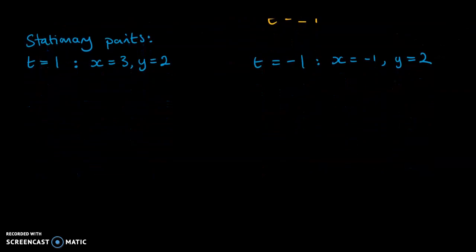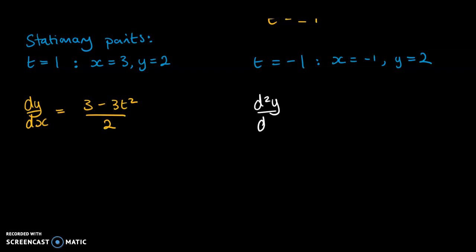Now we need to determine their nature, so for that we need to find the second derivative. The second derivative means we want to differentiate dy/dx again with respect to x — that's what the notation d/dx of dy/dx is saying. But the problem with parametric equations is we can't differentiate directly with respect to x because everything is expressed in terms of t.